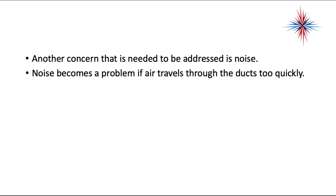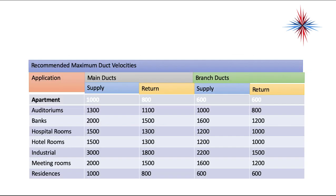We also have to worry about noise. Noise becomes a problem if air travels through the ductwork too quickly, so this has to do with the speed of air — feet per minute. We have recommended maximum duct velocities. For residential main ducts, no more than 1,000 feet per minute for supply or 800 feet per minute for return. For branch ducts, supply and return, 600 feet per minute.